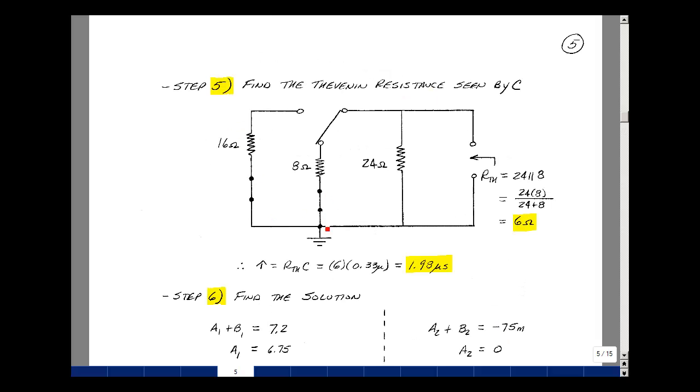That's the short circuit for a voltage source. Our circuit is still in this switch position. It changed state at t equals zero. All you see is the 8 ohm in parallel with the 24. This 16 here is really disconnected. So product over sum turns out to be 6 ohms.